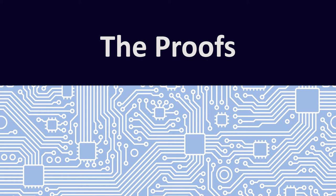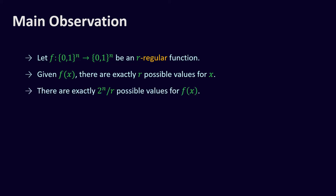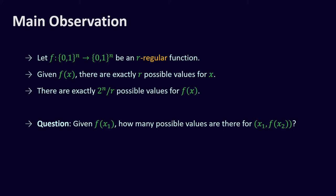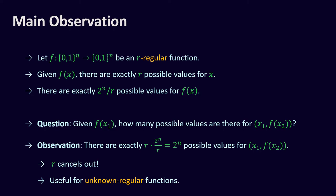In the rest of this presentation we will see the security proofs. The main observation behind the constructions is as follows. Let f be an R-regular function from n bits to n bits. Given f(x), there are exactly R possible values for x. Moreover, there are exactly 2^n / R possible values for f(x). So the pair (x_1, f(x_2)) given f(x_1) has exactly R times 2^n / R = 2^n possible values — meaning R cancels out. This fact is very useful when considering unknown regular functions.